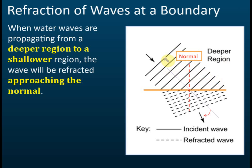Let me show you the diagram. This is the deeper region — we can identify it from the longer wavelength. This is the normal, and this is the direction of the wave. When the wave crosses the boundary into the shallower region, the shallower region can be identified by the much shorter wavelength. The direction of the wave is always at a right angle — 90 degrees — to the wavefront.